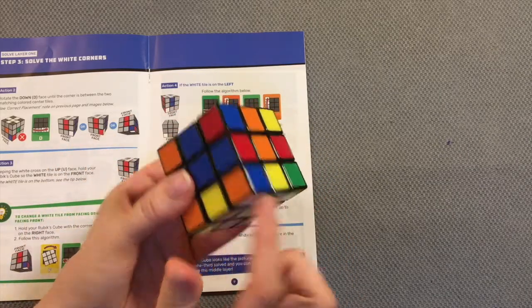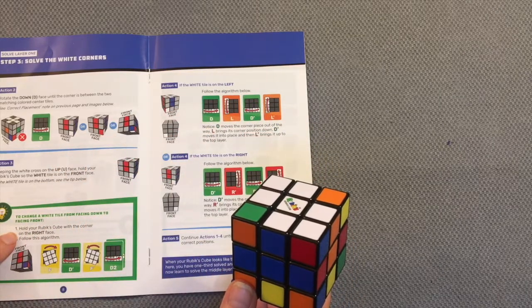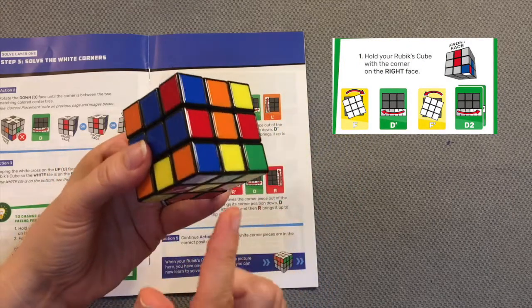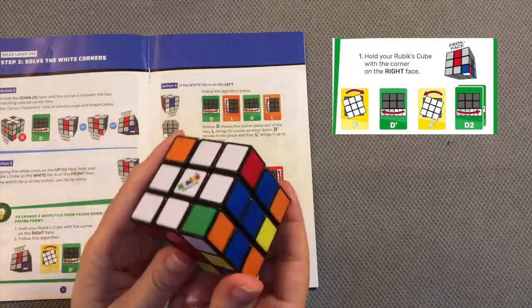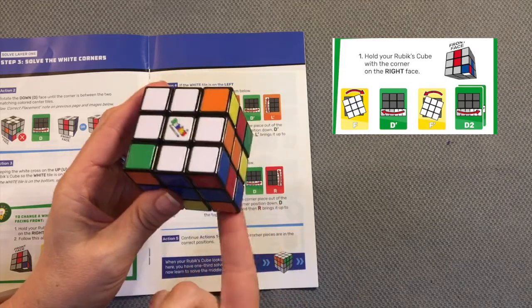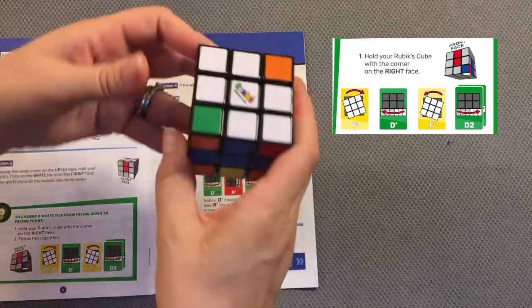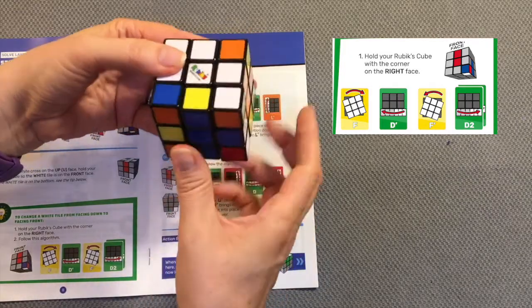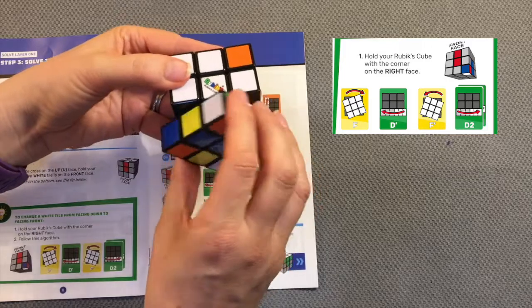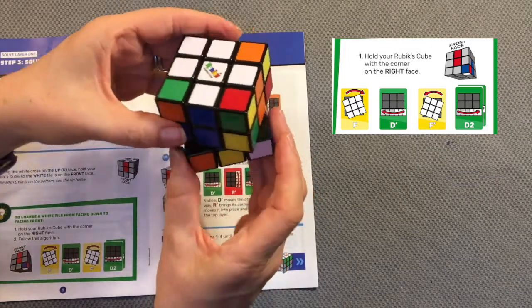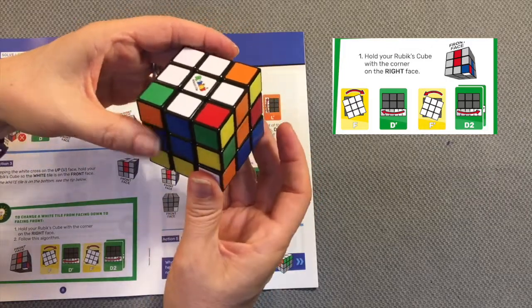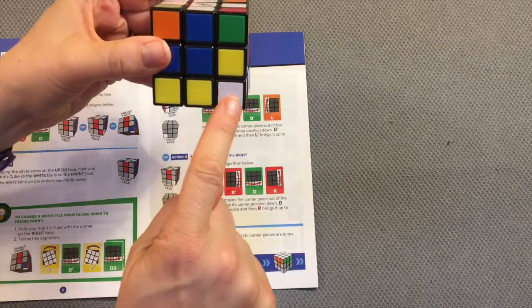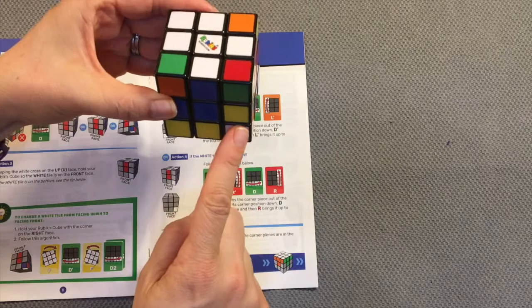Notice here this tip: to change a white tile from facing down, which is what I have here, to facing front, hold your Rubik's Cube with the corner on the right face. So here's my corner and there's my right face. Follow this algorithm: front face to the right, down face to the left, front face to the left, down face two times to the right. Now my white tile is no longer on the down face but it's now on this front face.